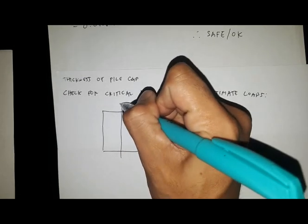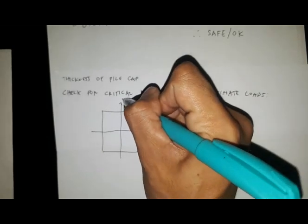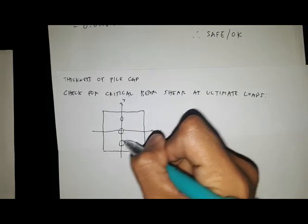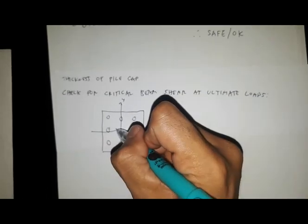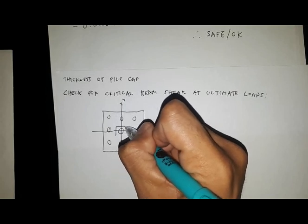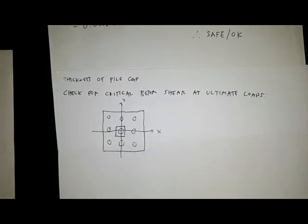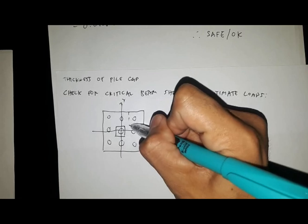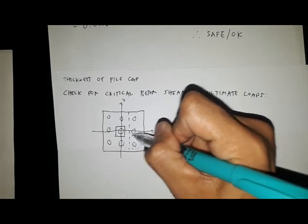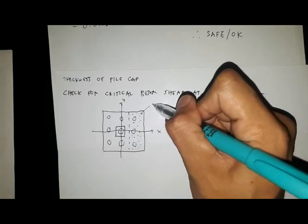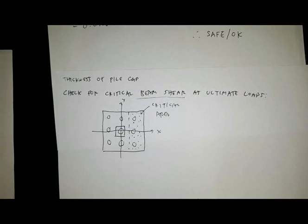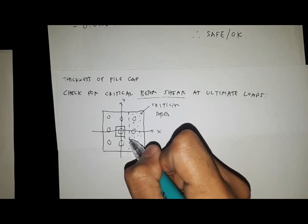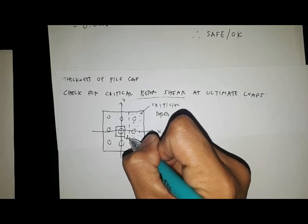We check for critical beam shear at ultimate loads by considering the critical area for beam shear. Here we have our X and Y axes, nine piles arranged in a grid, the column in the center, and the critical area shown by this dotted line. This distance from here is the value of our D, the effective depth.